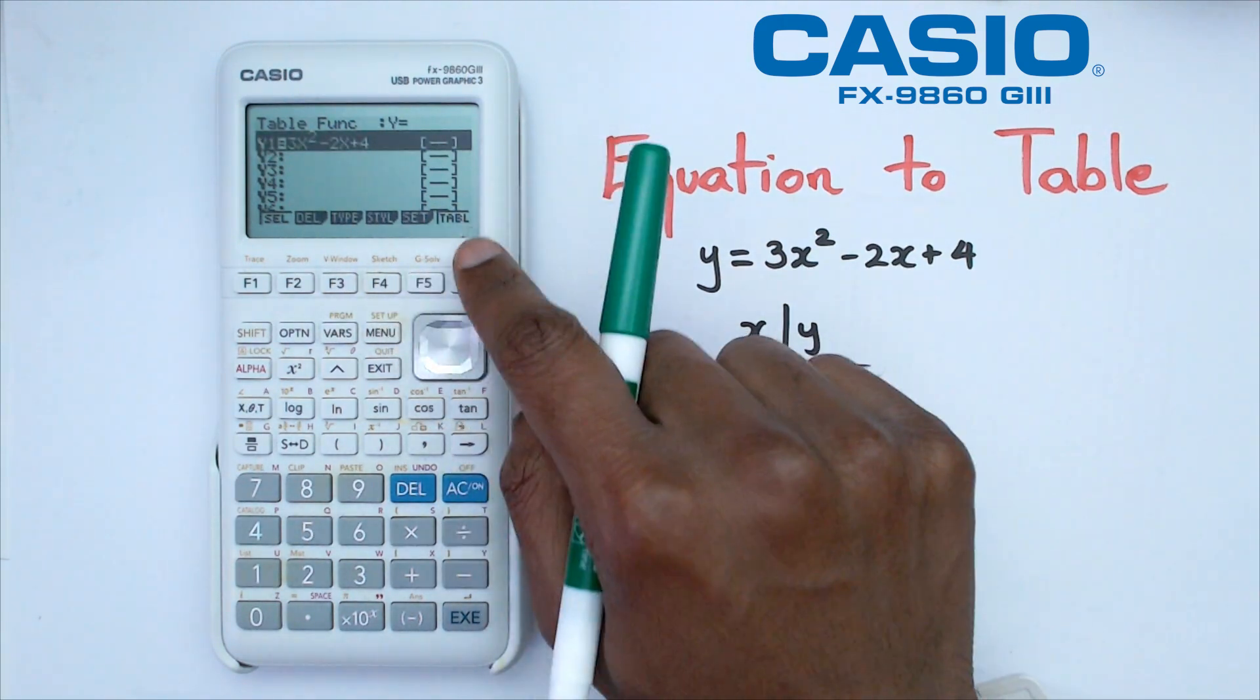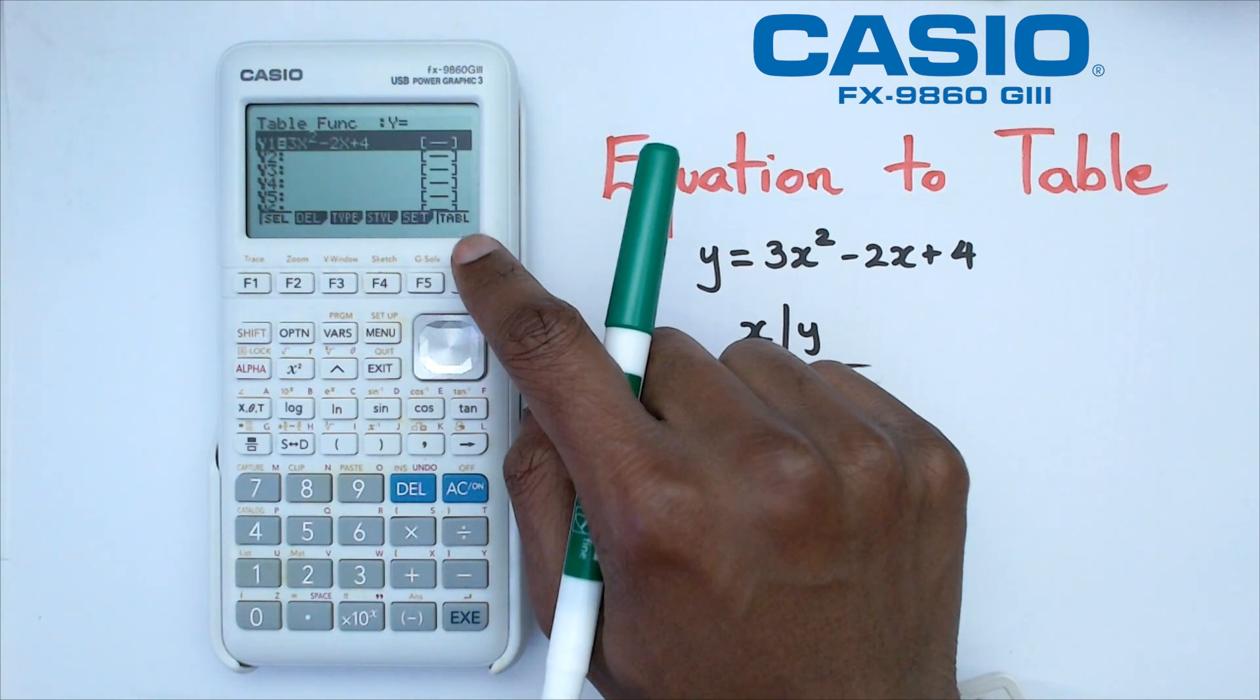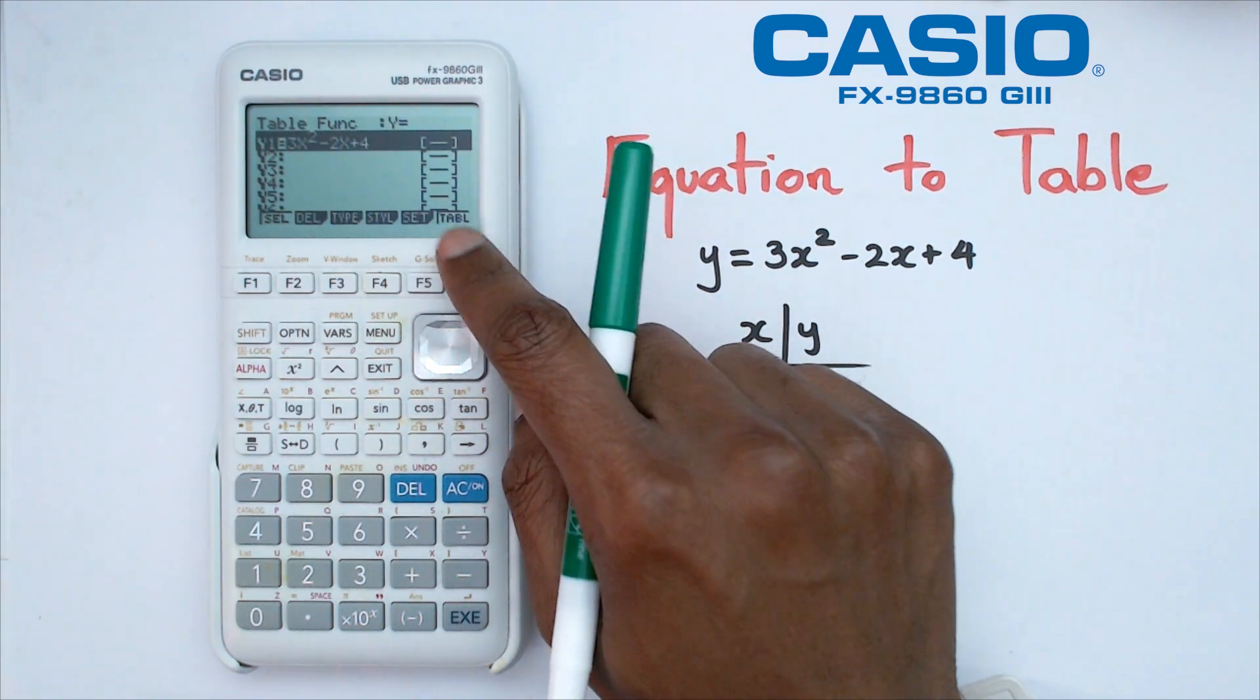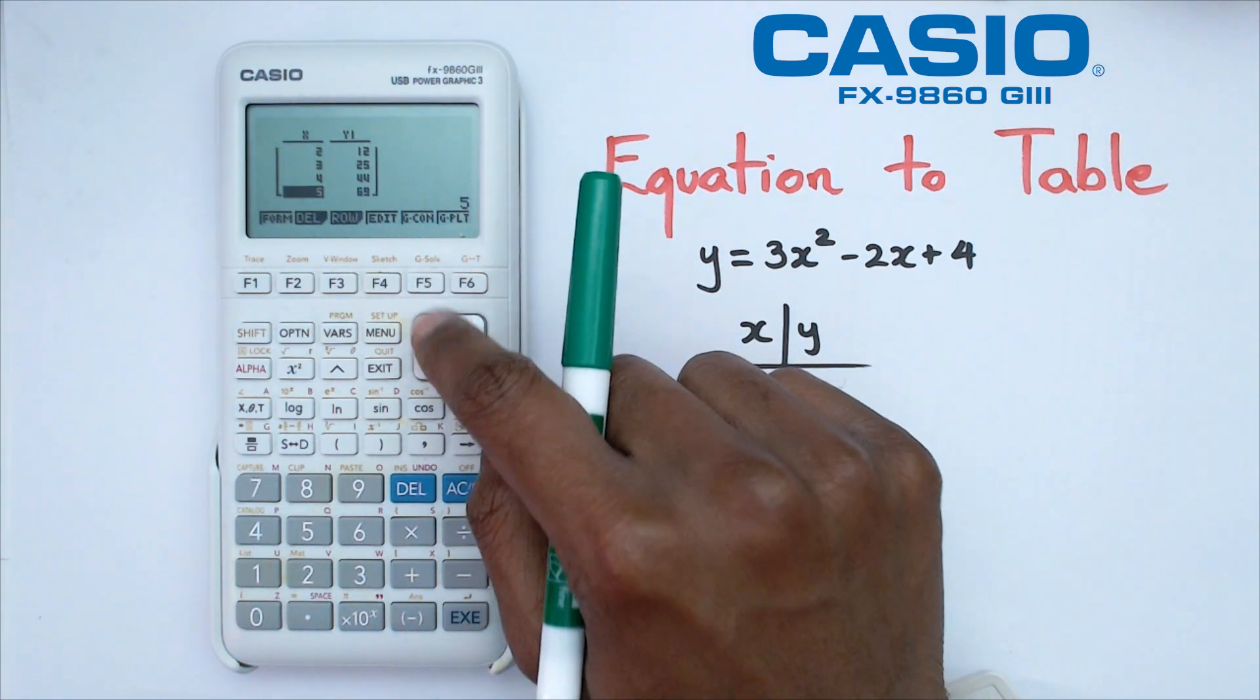You're going to have a couple of buttons you need to keep in mind. The first button is the set button and the next one is the table. The default is if you click on table it's going to go directly to the table and it's going to go from 1 to 5.